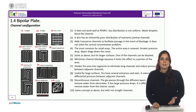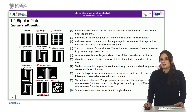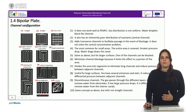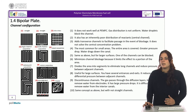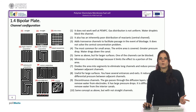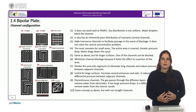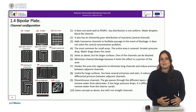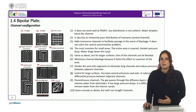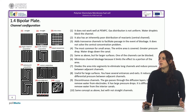In order to avoid this problem, the serpentine configurations from 4 to 8 can be used. In this configuration, the gases flow through a single channel that runs over the entire surface of the membrane. If there is an increase in water in the channel, the water is dragged out all the way, as the gases have no other way to circulate. Configuration 4 is suitable for small areas and configuration 5 for larger areas.